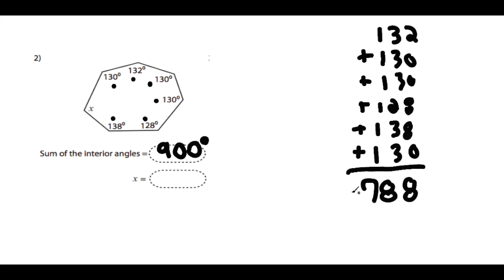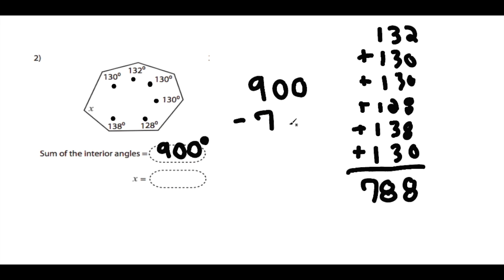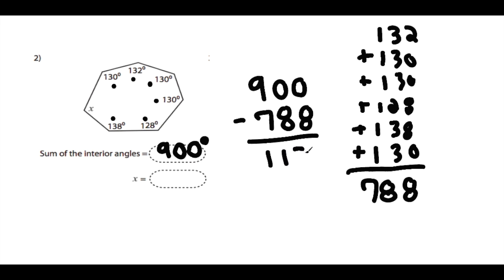Since we have the sum of all known angles, we take our total angle sum of 900 and subtract 788 — the sum of all the angles we have so far. When we do this, we are left with 112 degrees.